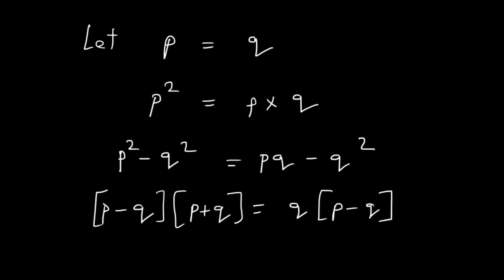Now, I can see that both on the left hand side and the right hand side, we have P minus Q as a factor. Let's cancel out the common factor both from the left hand side and the right hand side. We get P plus Q is equal to Q.